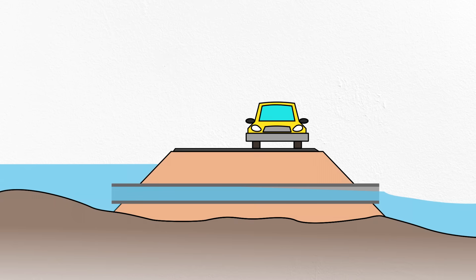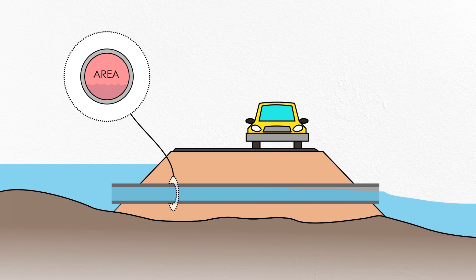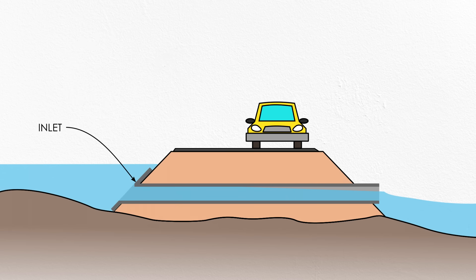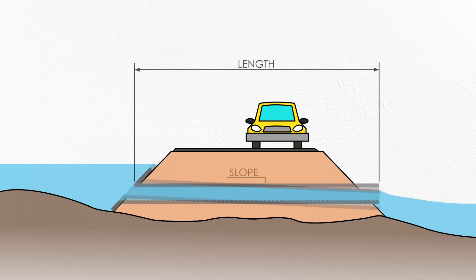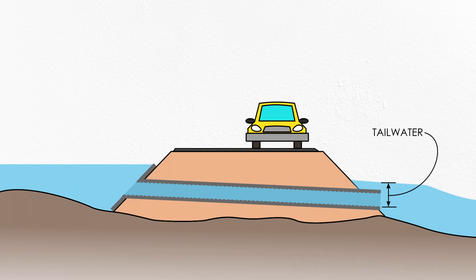There are eight factors that can influence the hydraulics of a culvert: headwater, or the depth of flow upstream; the cross-sectional area of the culvert barrel; the cross-sectional shape of the culvert barrel; the configuration of the culvert inlet; the roughness of the culvert barrel; the length of the culvert; the slope of the culvert; and the tailwater, or the depth of flow downstream.